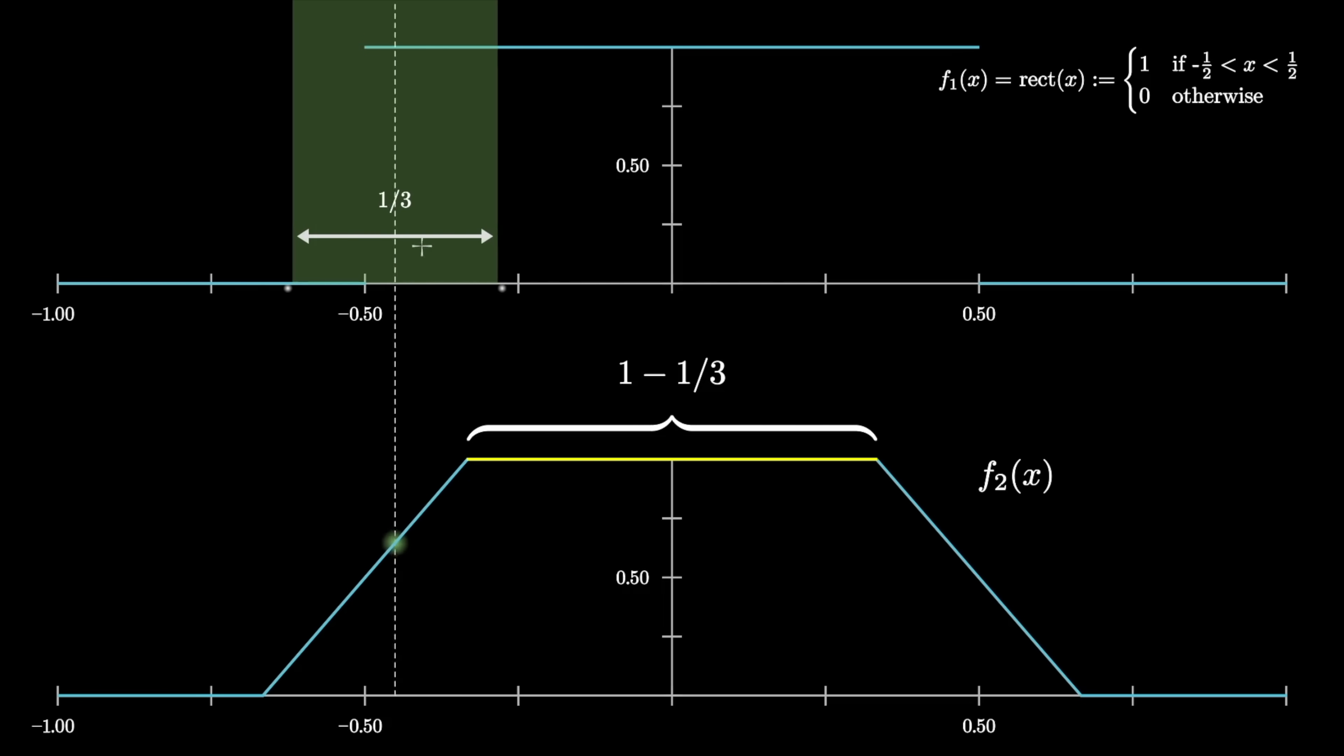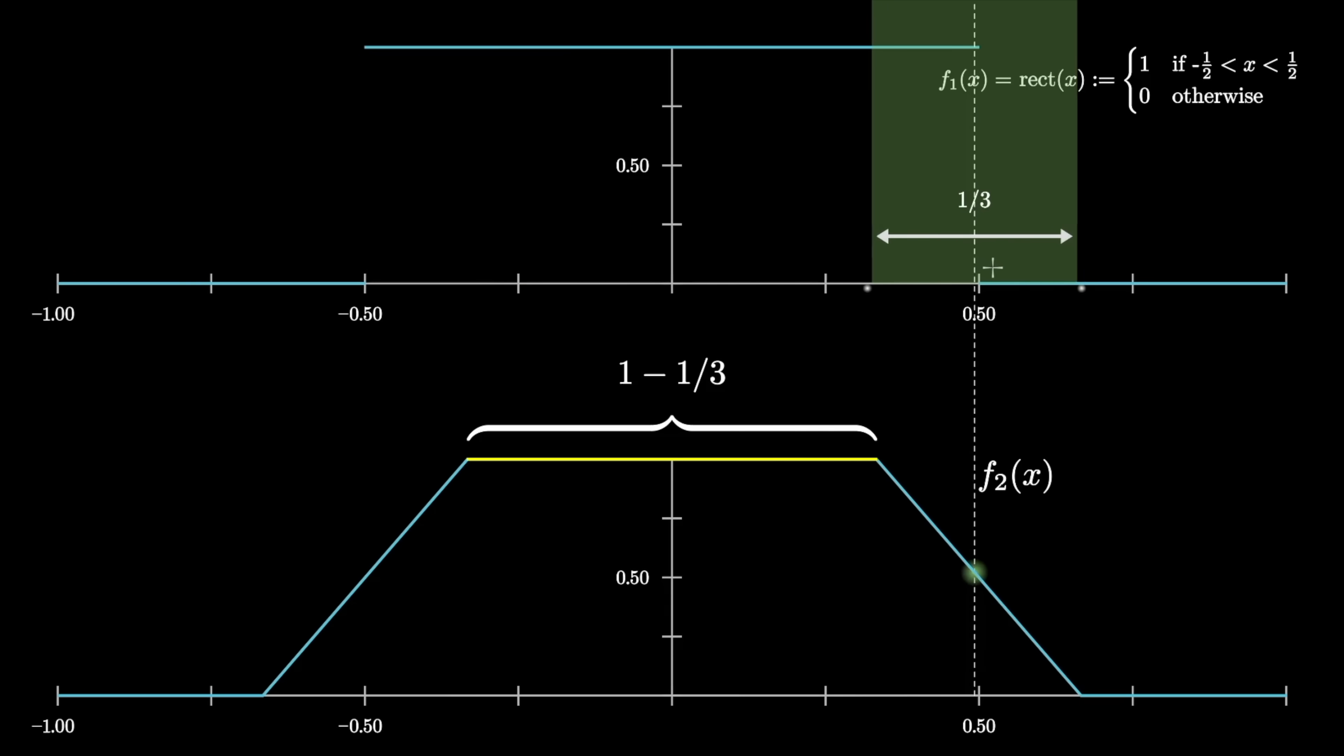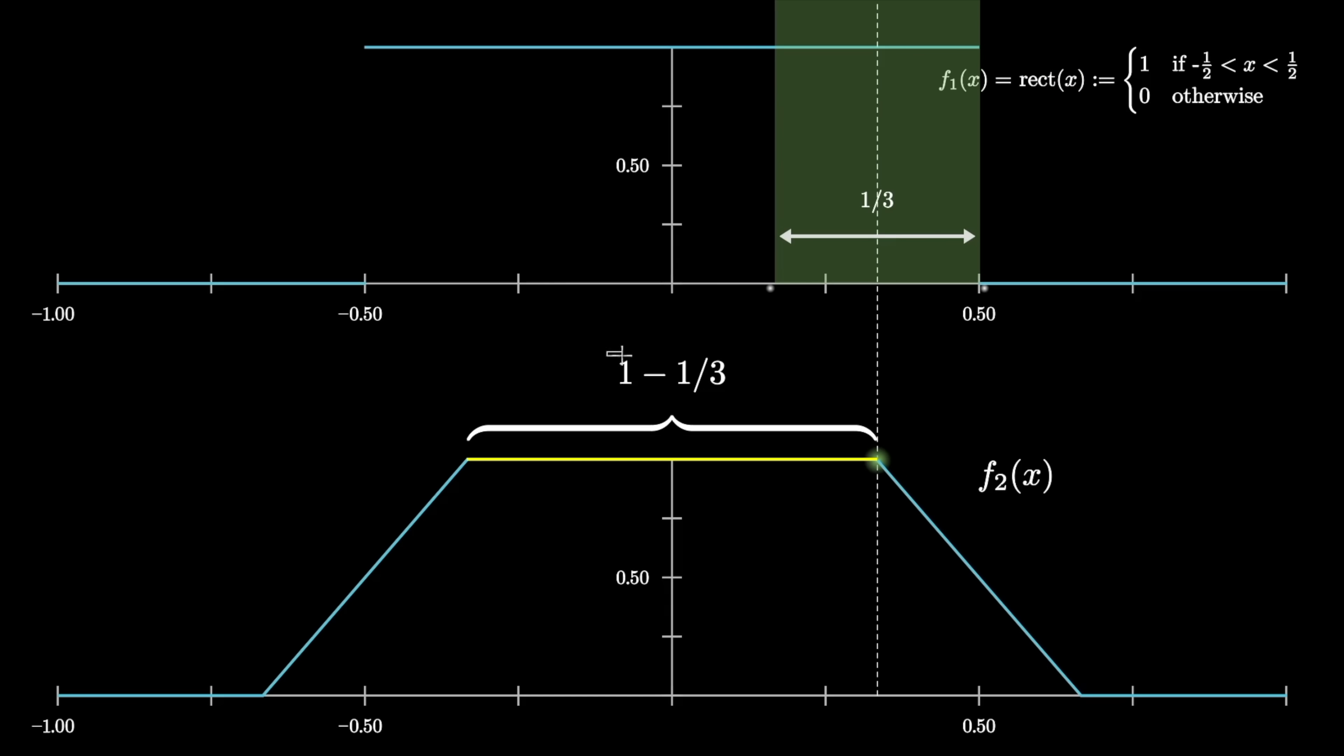If you think about it for a moment, the distance between the left edge of the top plateau and the left edge of the bottom plateau will be exactly half of the width of the window, so half of one-third. And similarly, on the right side, the distance between the edges of the plateaus is half of the window width. So overall, it's 1 minus that window width, which is 1 minus a third.